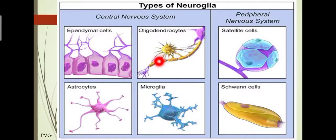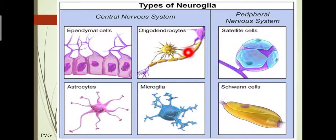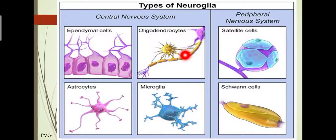White matter and gray matter are two matters in the central nervous system. The oligodendrocyte cell forms the myelin sheath. Myelin sheath is made up of proteins and fatty substances and it allows the quick transmission of electrical impulse.